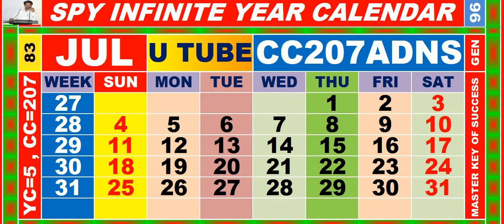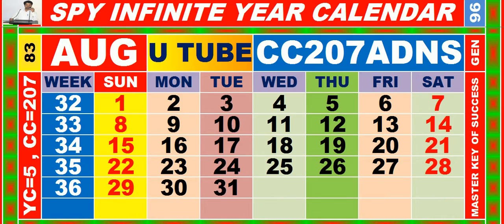Calendar for the month of July, having calendar code equal to 207. Calendar for the month of August, having calendar code equal to 207.